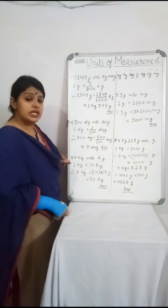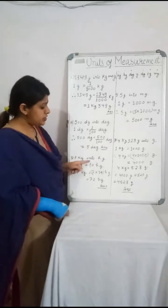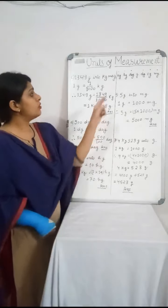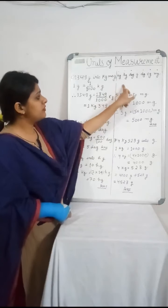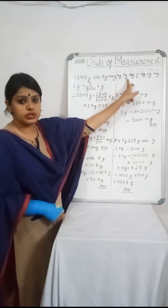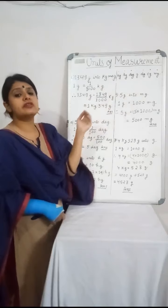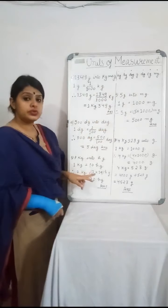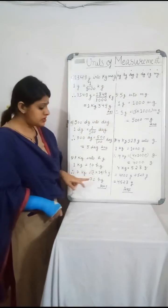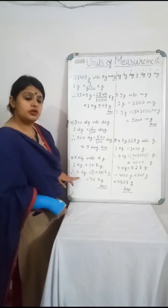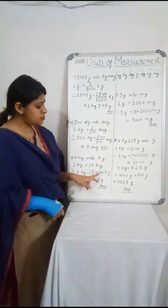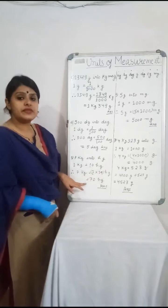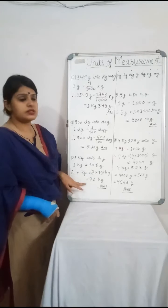E. Convert 7 kg into hectograms. From kg to hectogram, we move 1 step forward, which means we multiply by 10. So 1 kg is equal to 10 hectograms. And 7 kg will have more hectograms — that is 7 multiplied by 10 hectograms, which is 70 hectograms.